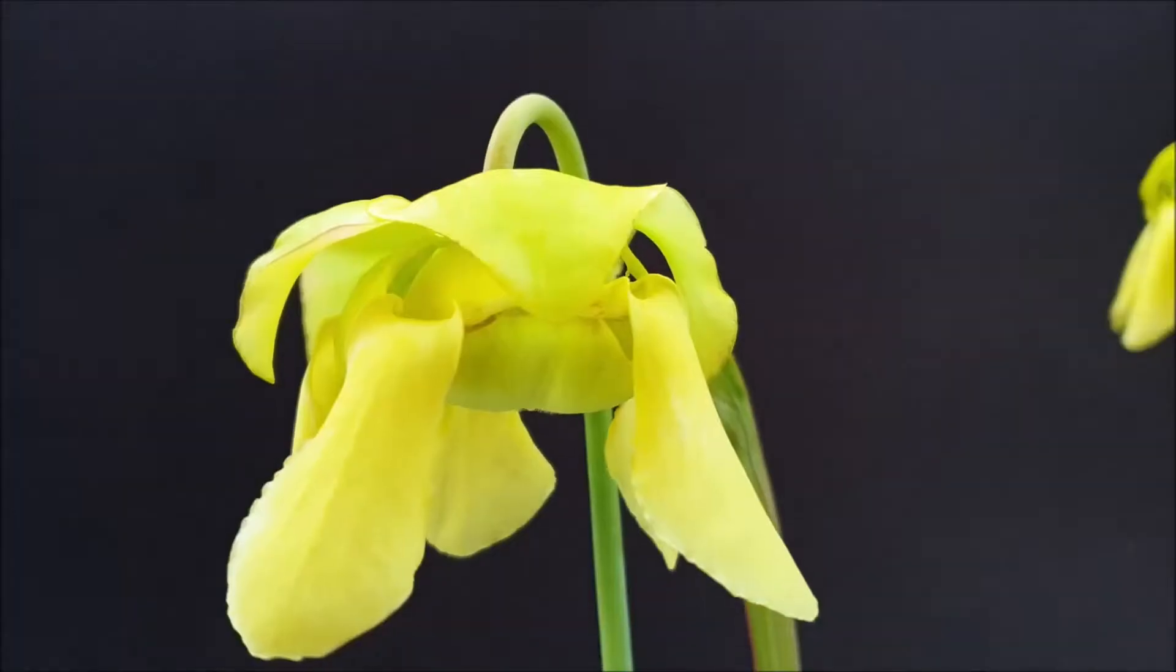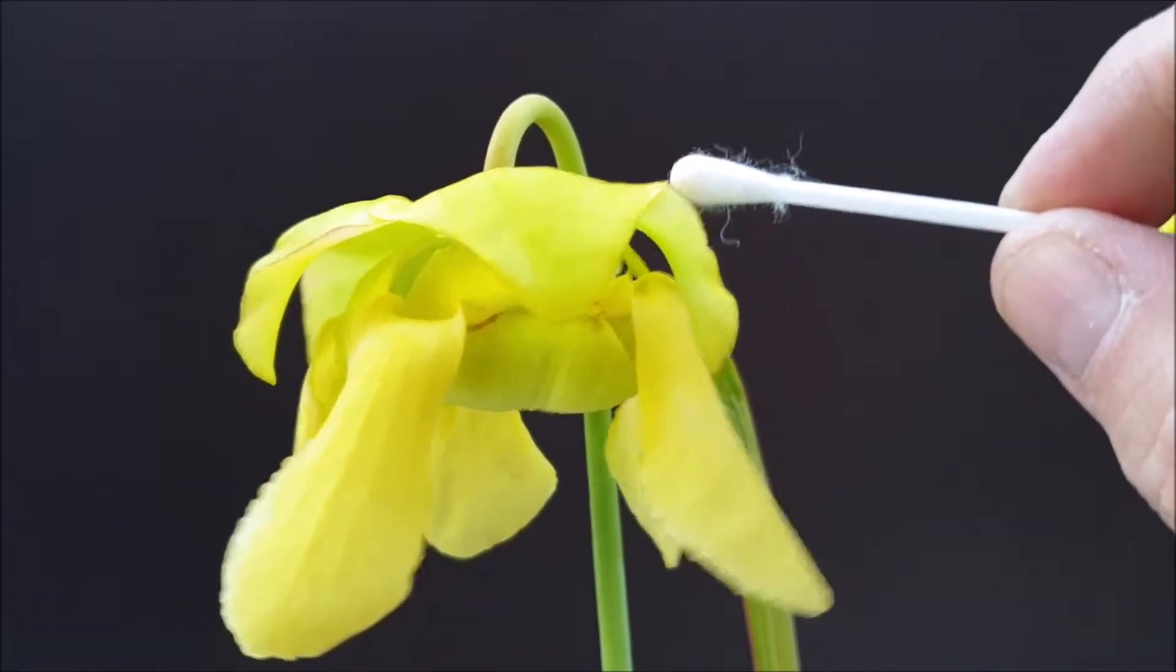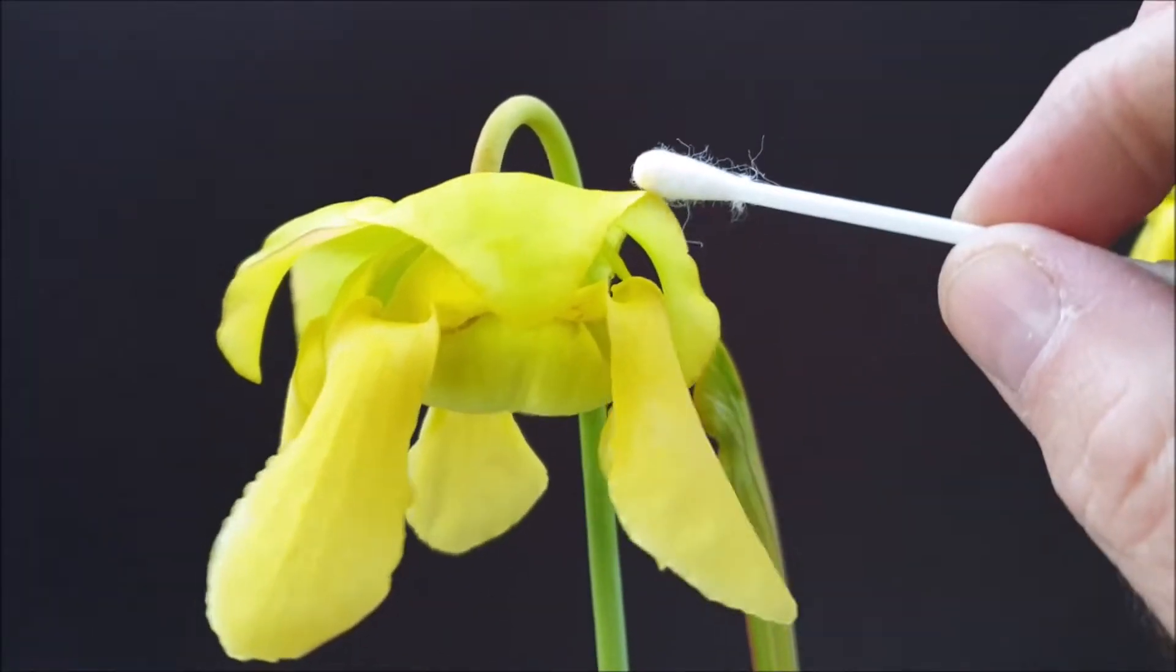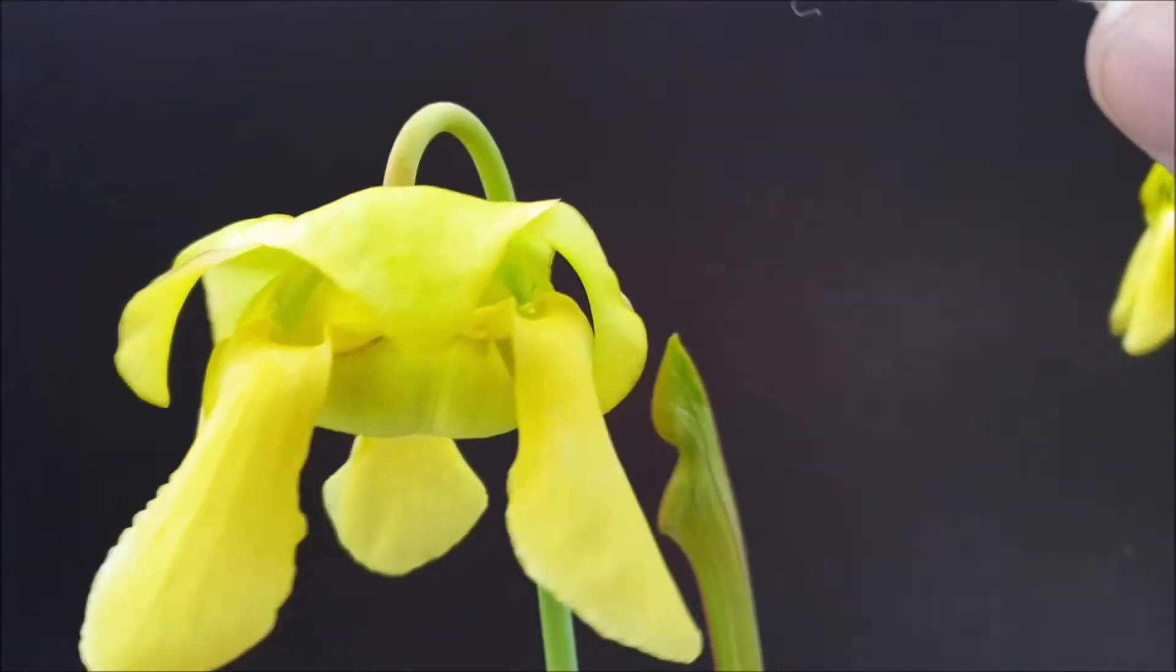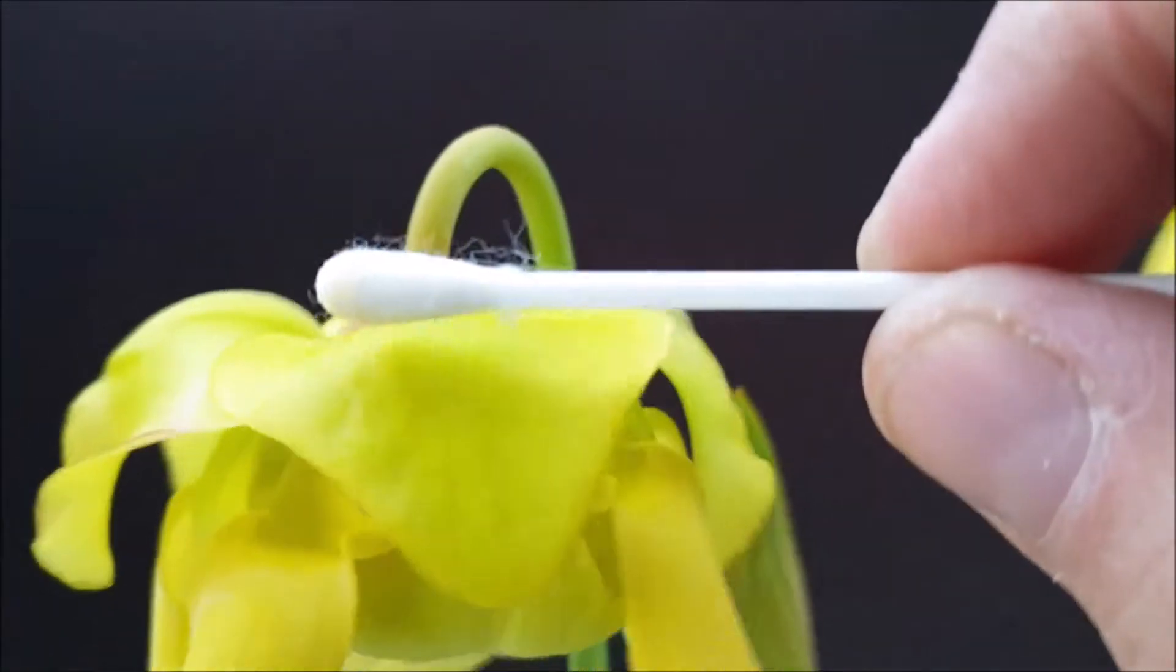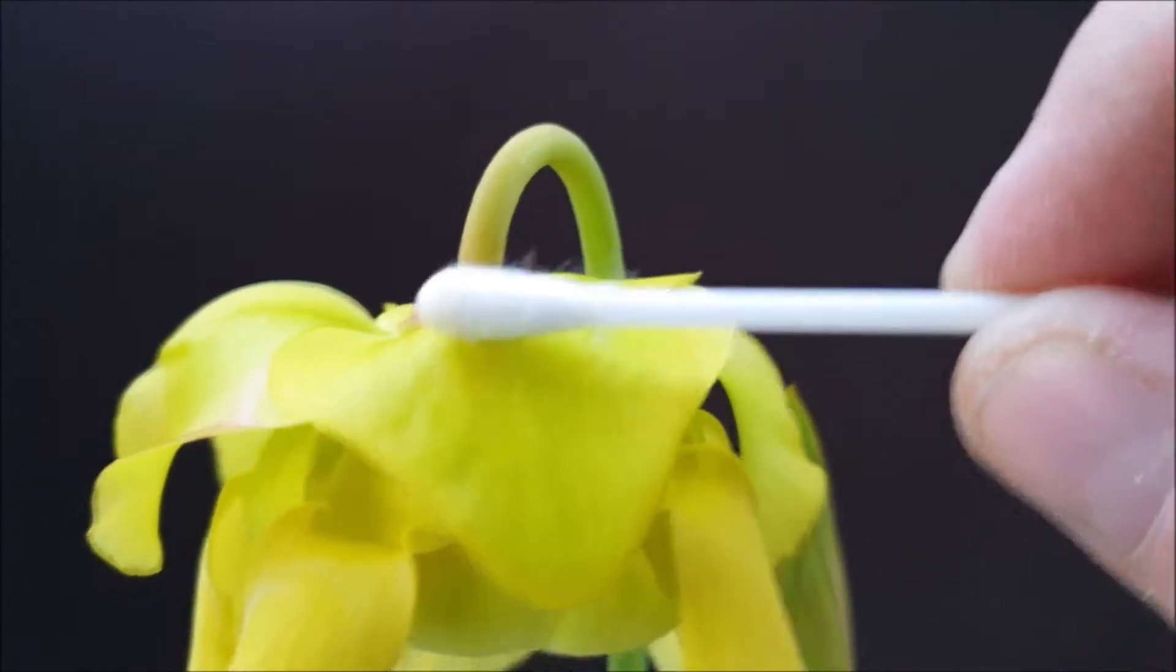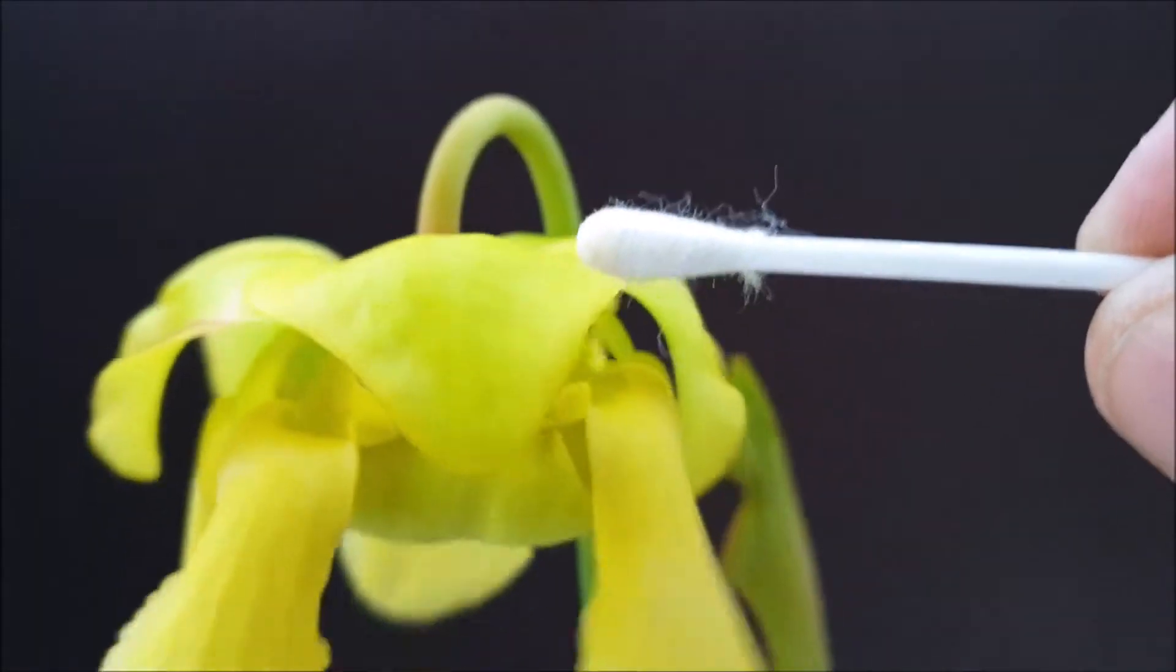Okay, so these Sarracenia flowers rely on insects such as bumblebees to pollinate the flowers. So what happens is the bee will land on the top part of the flower—these are the sepals, acts like a landing platform.